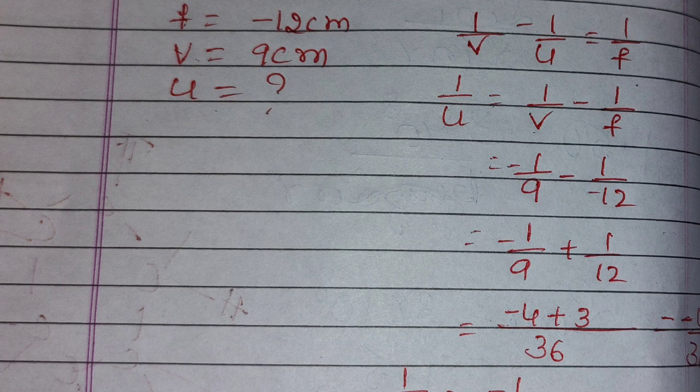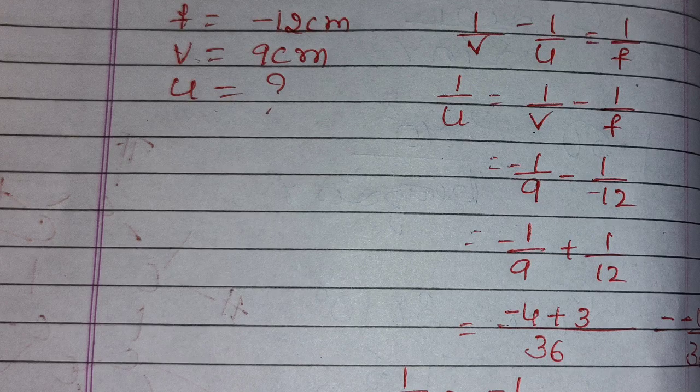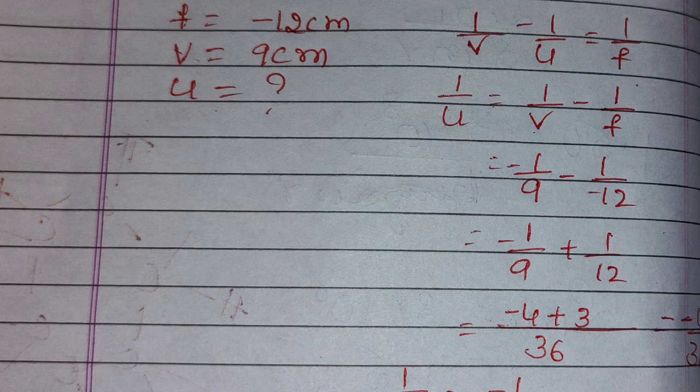Therefore u we have to find out. Formula we know lens formula: 1 by v minus 1 by u equals 1 by f. We are going to calculate u. Therefore 1 by u equals 1 by v minus 1 by f, so 1 by minus 9 minus 1 by minus 12.